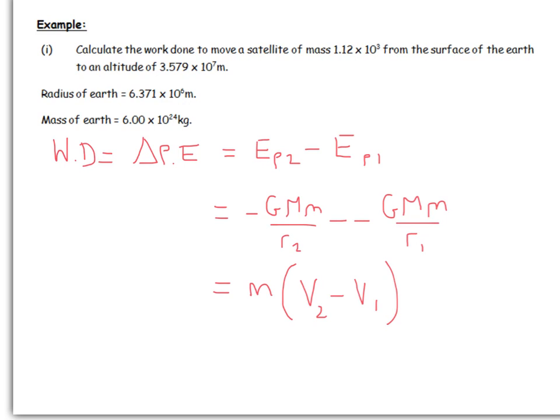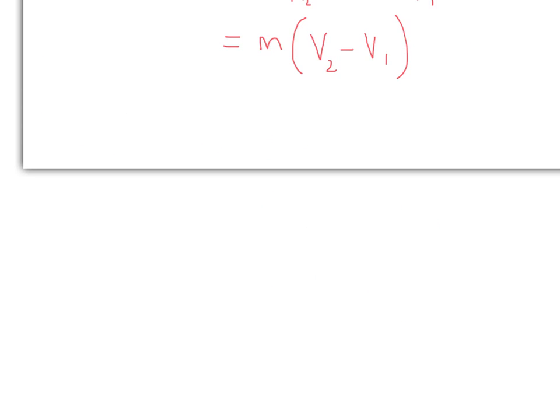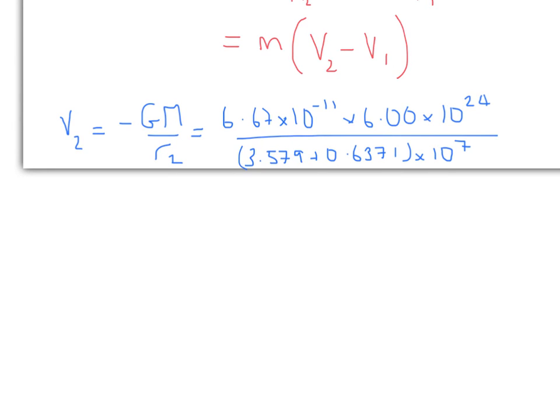So let's do the maths on those. So V2, I'm going to calculate by doing minus GM over r. So let's put those numbers in there, which we get like this. So remembering at 2, it's moved to an altitude, so that's why the radius and the altitude have been added together to give you a new radius here. And if we do the maths, I'm not going to round at this stage, but you get something along minus 6.28 times 10 to the 7 joules per kilogram.